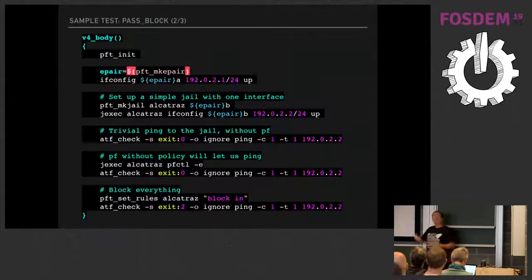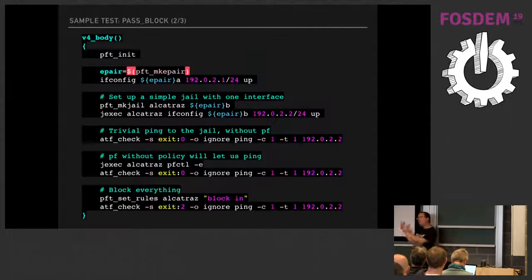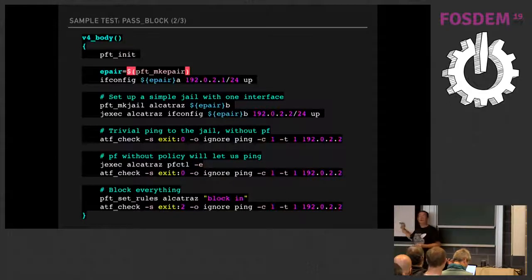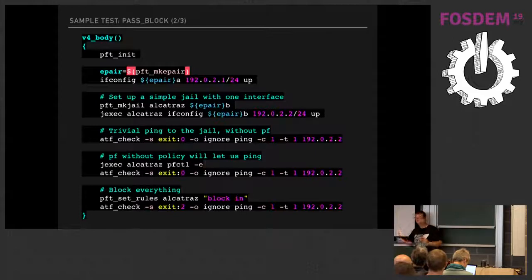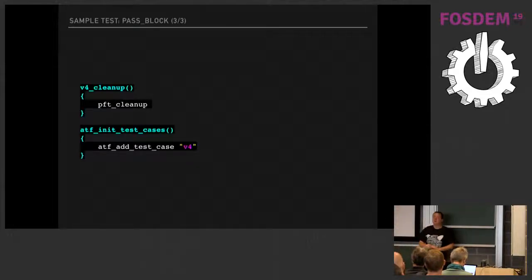That's a very basic test, but the firewall should be able to make more fine-grained decisions than just allow-all or deny-all. You can see how you can fairly trivially test filtering only ICMP echoes, and then verify you can still reach other services. After the test body comes the cleanup code, and then you add the test case to the list of test cases.